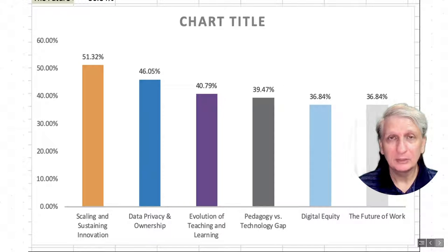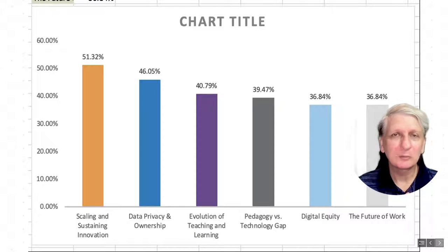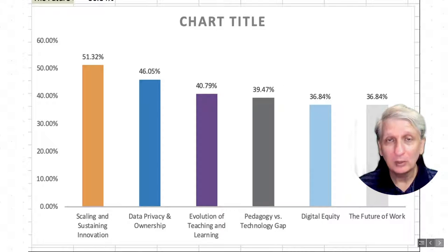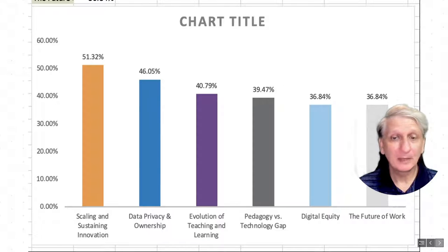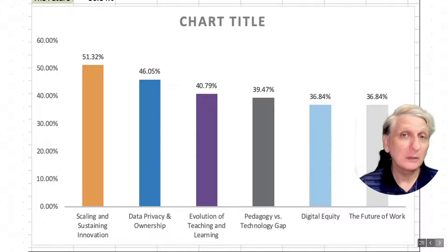Data privacy and ownership is an increasing challenge. The evolution of teaching and learning — how the nature of teaching is changing, moving from teacher-centered lecture style to much more interactive, student-focused and initiated learning experiences — is another significant hurdle. Digital equity remains a challenge, with various groups in society not having as much access to educational technology and learning as others. And the nature of work is changing outside of education, which needs to be considered as we look at what's important within education.